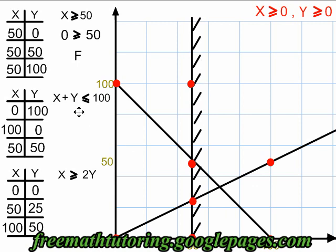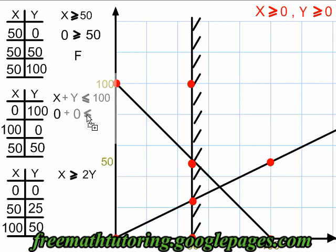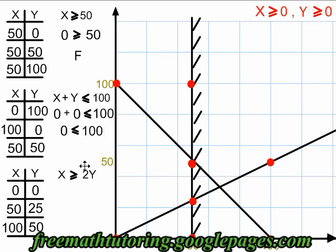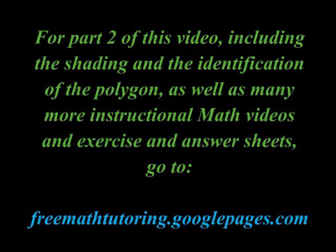For the second inequality, x plus y less than or equal to 100, it also doesn't go through the origin, so I use 0, 0 as my test point. Plugging in gives 0 plus 0 is less than or equal to 100, which simplifies to 0 is less than or equal to 100. This is true. True means towards — I shade towards the test point.